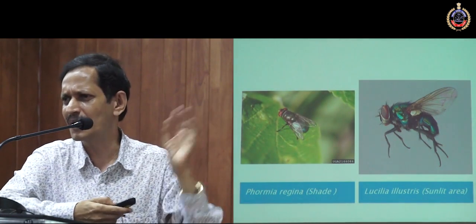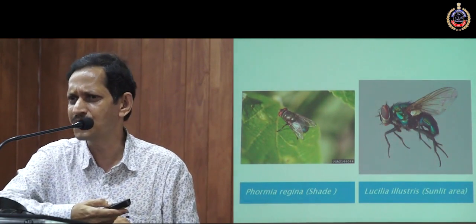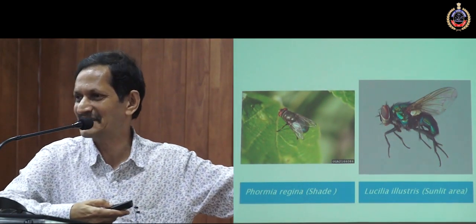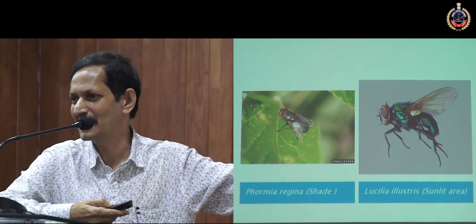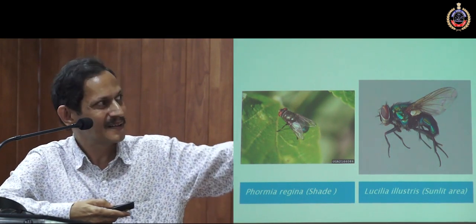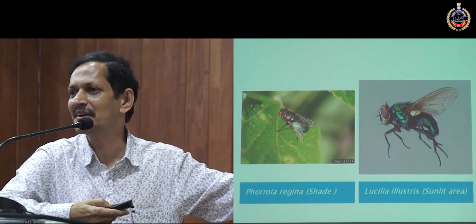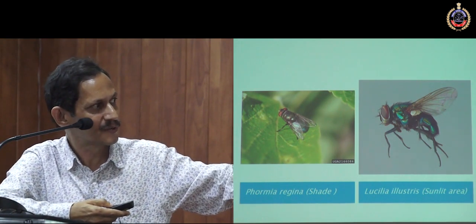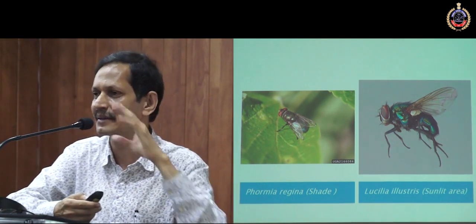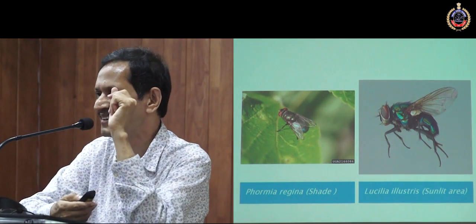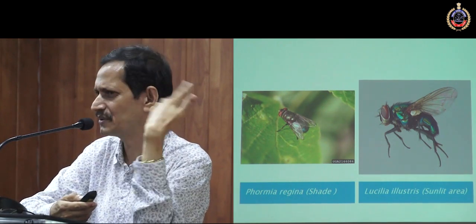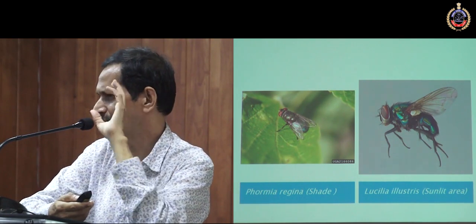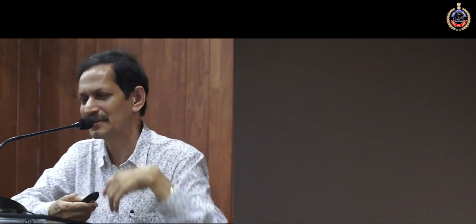These are examples of two blowflies. The left one is a shade-loving insect, and the right one is Lucilia, found in sunlit areas. They look almost similar, but one will breed only under shaded conditions. That kind of entomological clue can give you some idea about place of death.